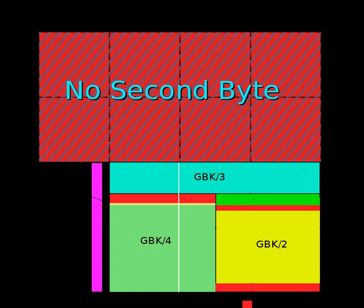GB18030 defines a 1-, 2-, and 4-byte encoding. The 2-byte codes are defined in a lookup table, while the 4-byte codes are defined sequentially to fill otherwise unencoded parts in UCS. GB18030 inherits the bad aspects of GBK, most notably needing special code to safely find ASCII characters in a GB18030 sequence. The 1- and 2-byte code points are essentially GBK with the euro sign, PUA mappings for unassigned user-defined points, and vertical punctuations.